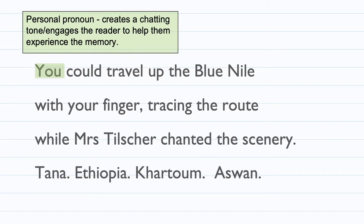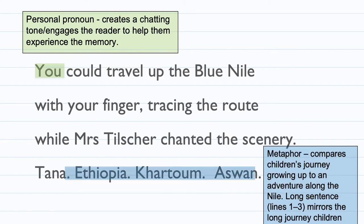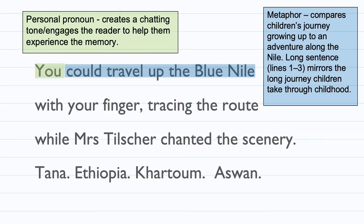Personal pronouns are the same as direct address. By saying 'you,' it includes the reader further — it's saying that the reader could travel up the Blue Nile. It's a metaphor, comparing the children's journey to an adventure along the Nile. It's a long sentence going from line one to line three, and this mirrors the long journey the children take through childhood — a nice one that will get you some easy marks in your set text assessment.